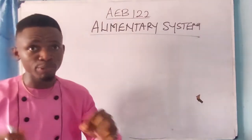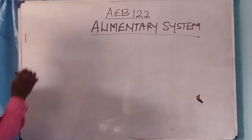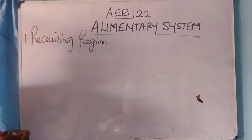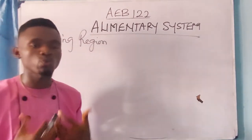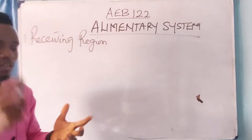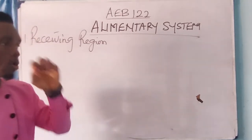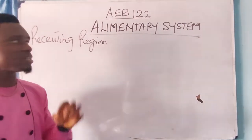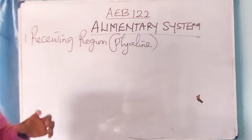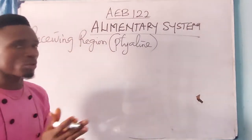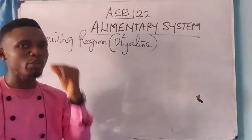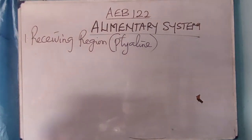In today's video I will be taking us through different regions of the alimentary system based on function. There are about four regions. The first is the receiving region — the region that accepts food molecules once they are swallowed. As you ingest food molecules they are masticated in the mouth. The mouth consists of the salivary gland, the hard palate, and the soft palate. The salivary gland produces saliva, which contains an enzyme called ptyalin. Ptyalin is alkaline and helps bind food molecules into a bolus. Carbohydrates are digested in alkaline medium — that is, in the mouth.